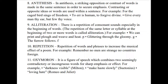The next figure of speech is alliteration — a repetition of consonant sounds, especially at the beginning of words. For example: 'We can print and plough and weave and heat' — repetition of consonant sounds. 'Glittering through the gloomy' — the consonant sound of letter G is being repeated. 'The furrow follows free' — the consonant F is repeated in these sentences.